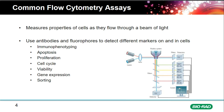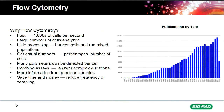You can use antibodies and fluorescent dyes to detect many different markers on and within cells. Common flow cytometry assays include immunophenotyping, apoptosis, proliferation, cell cycle, viability, gene expression with fluorescent proteins, and cell sorting. Flow cytometry is very popular — the number of publications per year continues to rise.